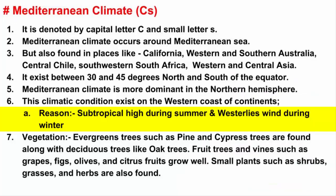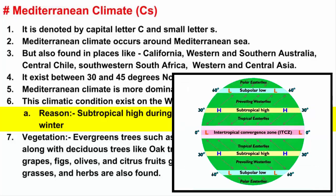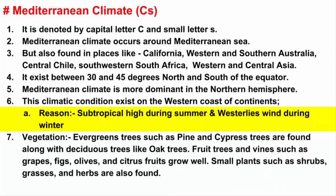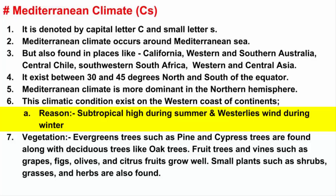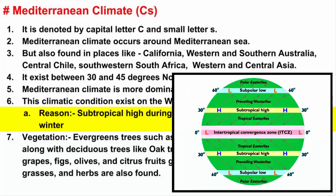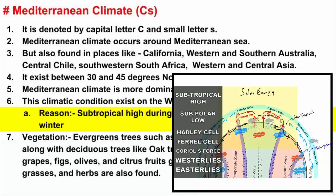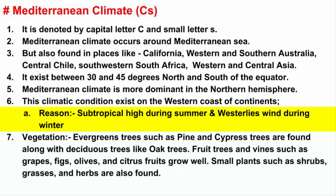Now I want you to carefully understand this. Subtropical high is a high pressure belt. That means it contains cool and dry air, because high pressure is associated with cool and dry air that sinks. Subtropical high exists around the latitudes of 30 degrees north in the Northern Hemisphere and 30 degrees south in the Southern Hemisphere. I have a video on subtropical high — the link will be in the description. What we saw is that the Mediterranean climate exists during summer because of subtropical high.